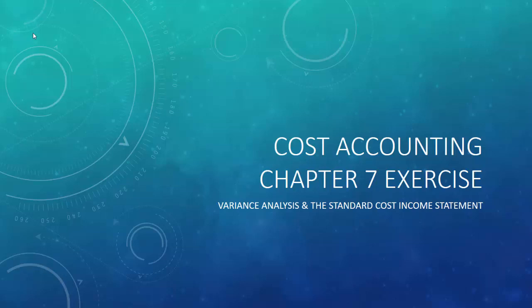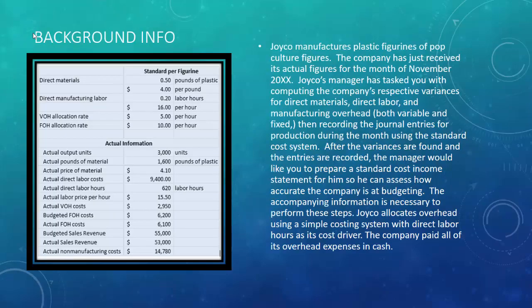Hi everyone, this is an exercise for chapter 7. We're going to be covering variance analysis and the standard cost income statement. In our example, this is our information. Our company is Joico, and Joico manufactures plastic figurines of pop culture figures.